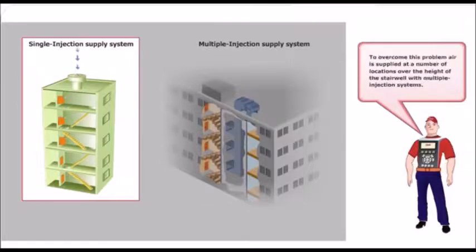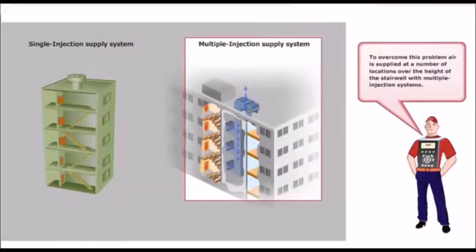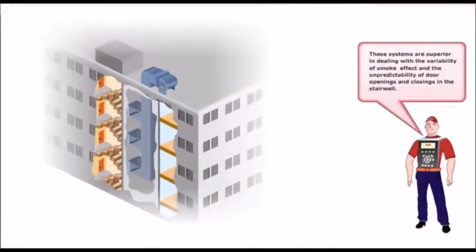To overcome this problem, air is supplied at a number of locations over the height of the stairwell with multiple injection systems. These systems are superior in dealing with the variability of smoke effect and the unpredictability of door openings and closings in the stairwell.